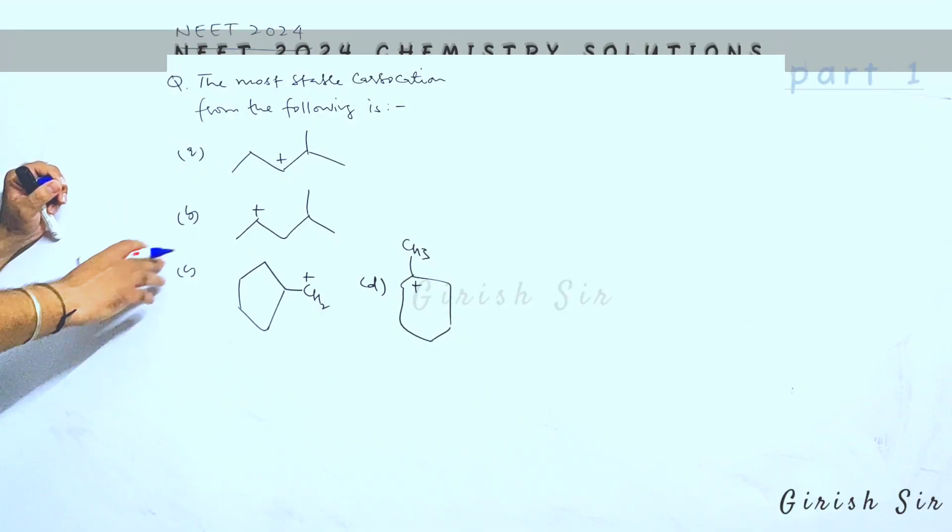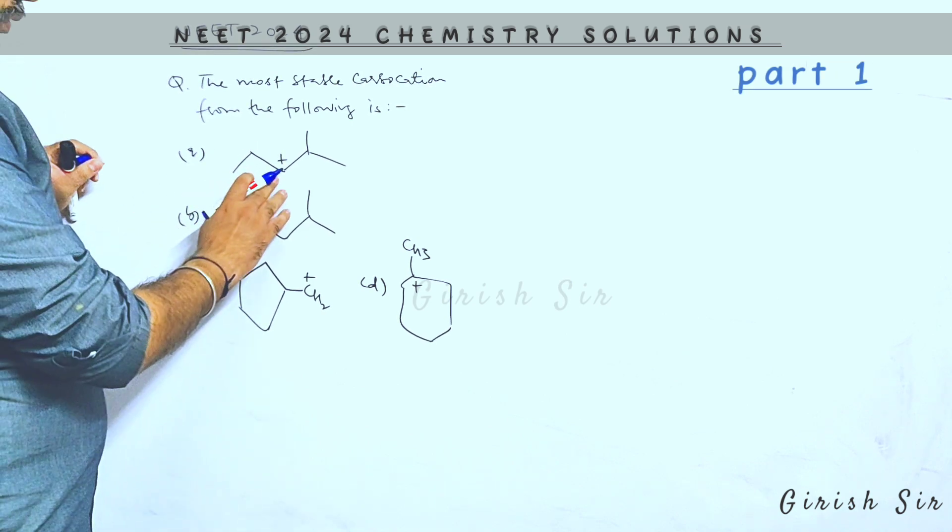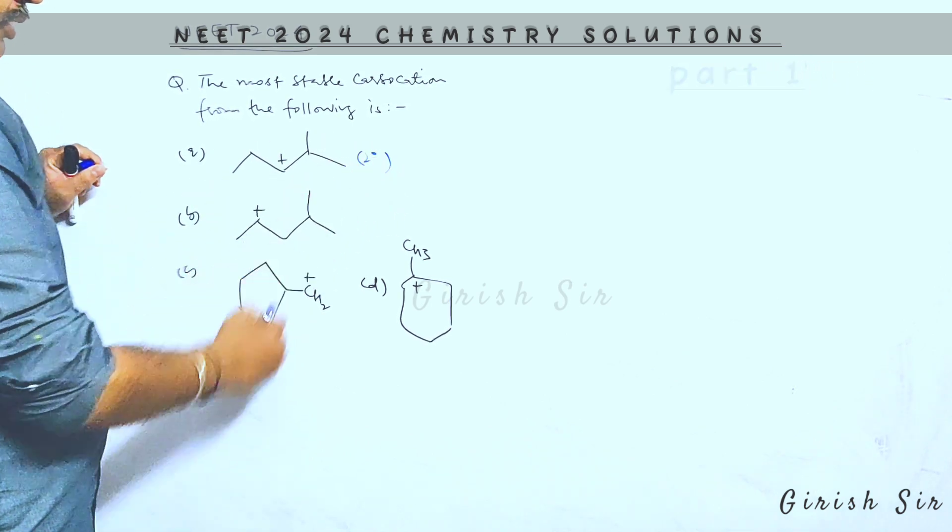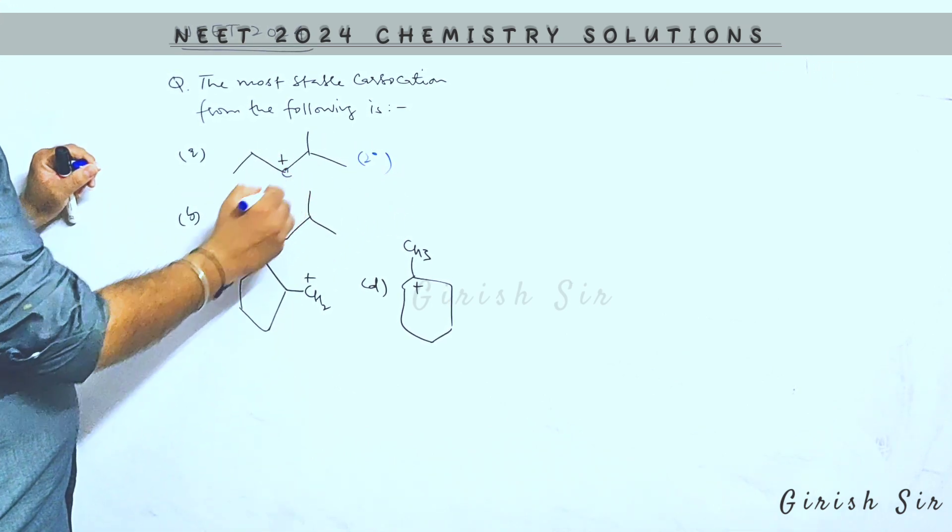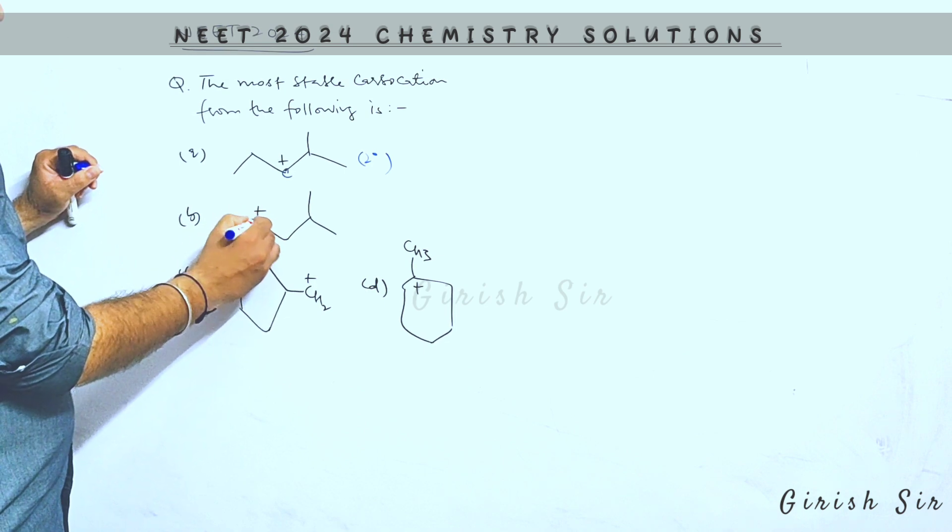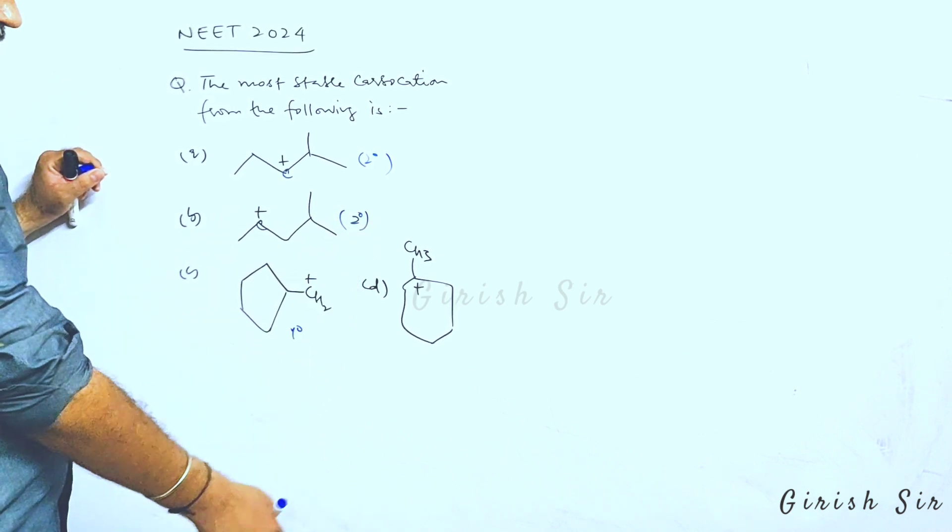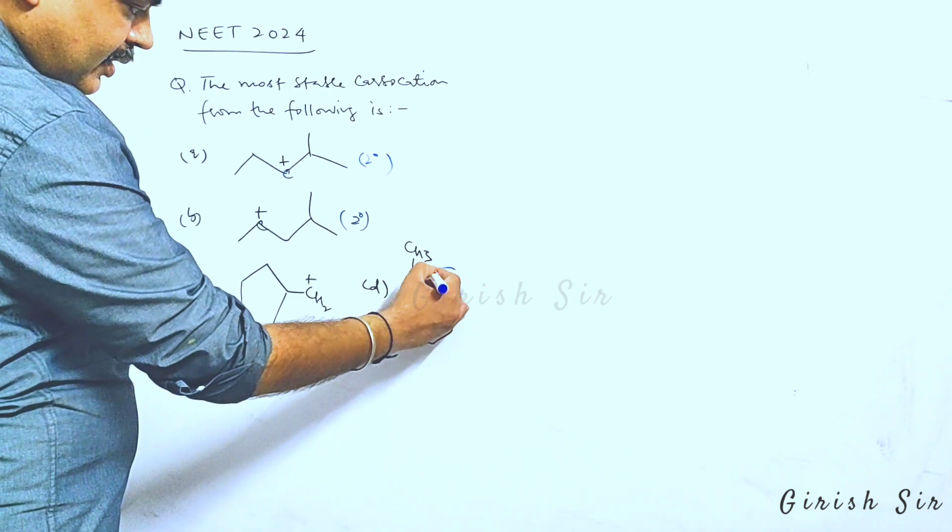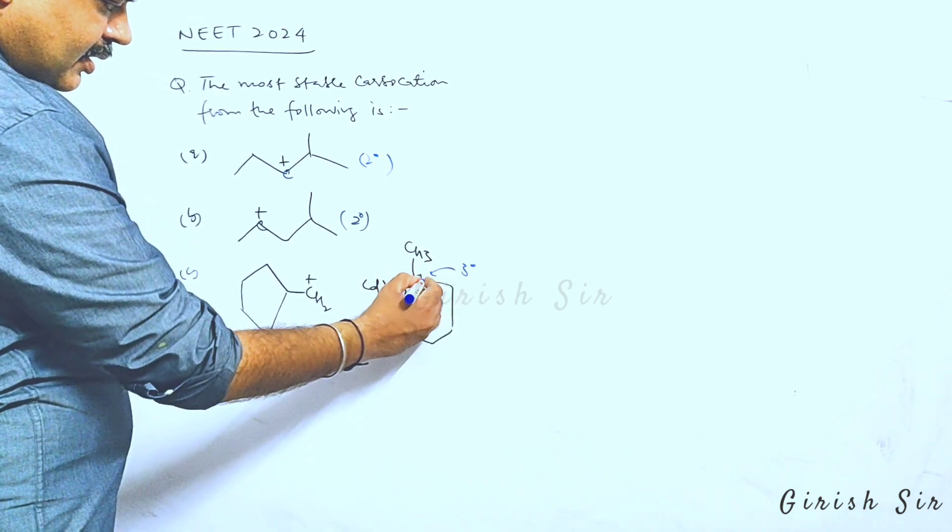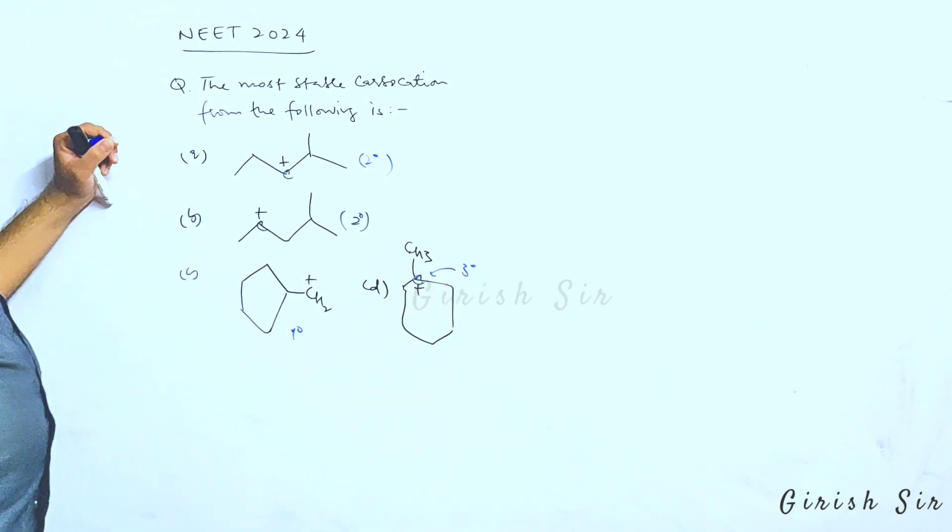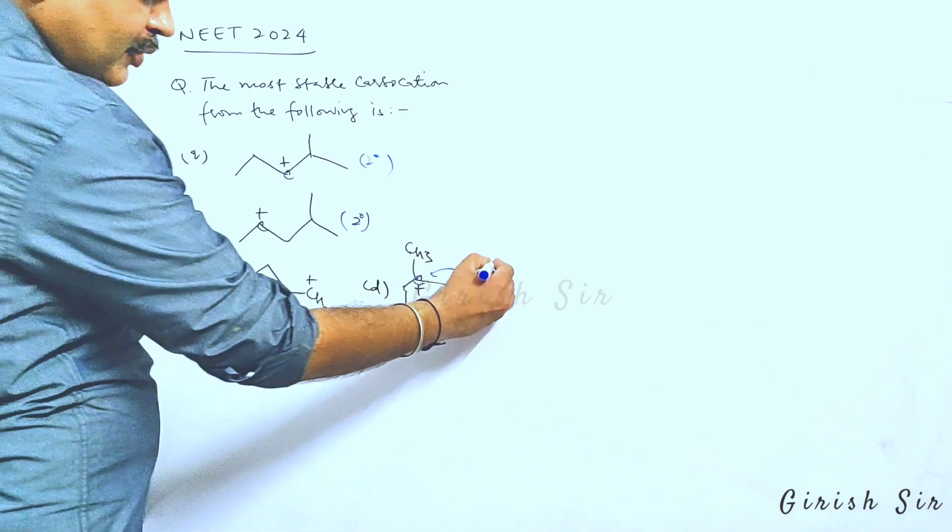Let's see this question. We have to identify the most stable carbocation. The first one, if you look at, is a 2-degree carbocation. The next one is also a 2-degree carbocation. This is a 1-degree carbocation. And in option D, we have a 3-degree carbocation. You can see this carbon attached to three carbons. It's a 3-degree carbocation. This is expected to be the most stable.